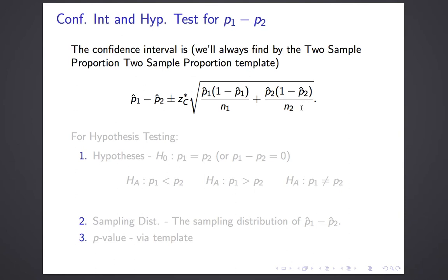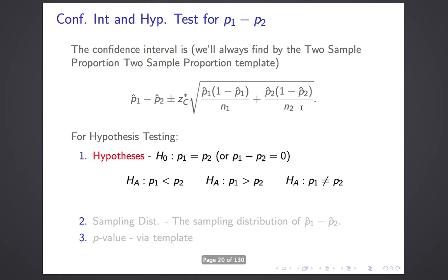We won't need to remember that formula because we'll use the template to compute it. For hypothesis testing, remember the five steps. The first step is to identify the null and alternate hypothesis. There's only one null hypothesis we'll ever consider: the two proportions are equal — P1 equals P2, or equivalently, the difference equals zero. You can do a test where the null hypothesis has the difference equal to some other number, but it's not really useful, so we won't learn it.